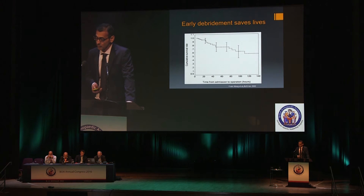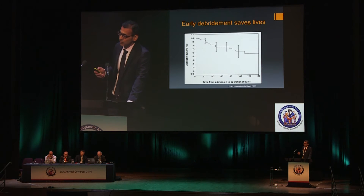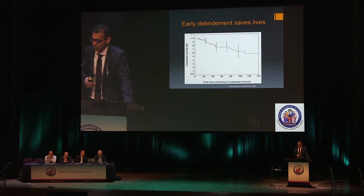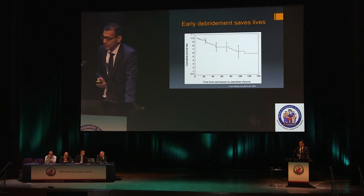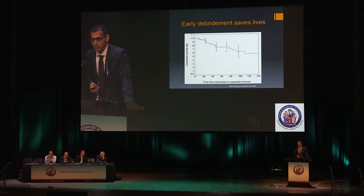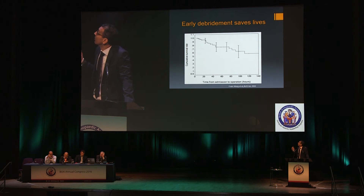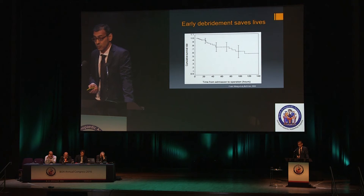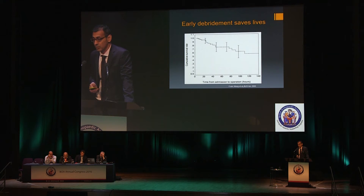Before I talk about treatment, I want to work backwards from this point. We've known for decades that early debridement saves lives. If you're able to get your patients to this stage early, you have a very high chance of saving them. The problem comes with late diagnosis. We've got to find ways of flagging up likely patients with necrotizing fasciitis so we can act quickly.